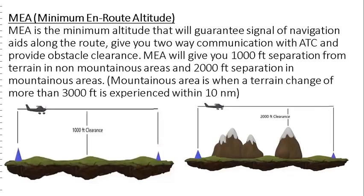Minimum En Route Altitude is the minimum altitude that will guarantee signal reception from navigation aids along the route, give you two-way communication with a traffic controller, and provide obstacle clearance. Minimum En Route Altitude will give you 1,000 feet separation from terrain in non-mountainous areas and 2,000 feet separation in mountainous areas. Mountainous areas are defined as where a terrain change of more than 3,000 feet is experienced within 10 nautical miles.